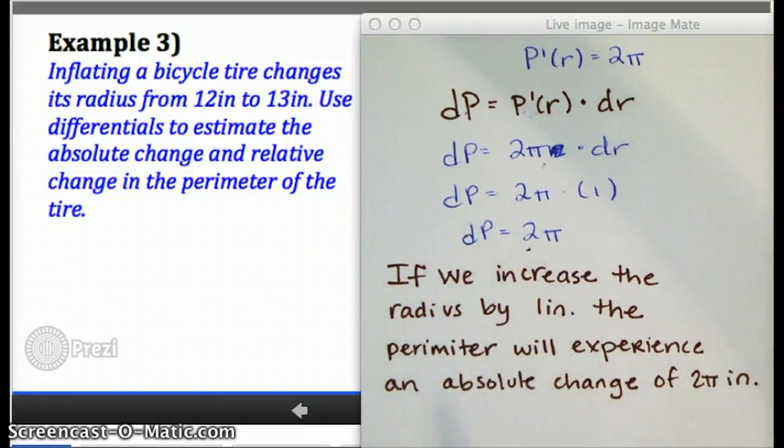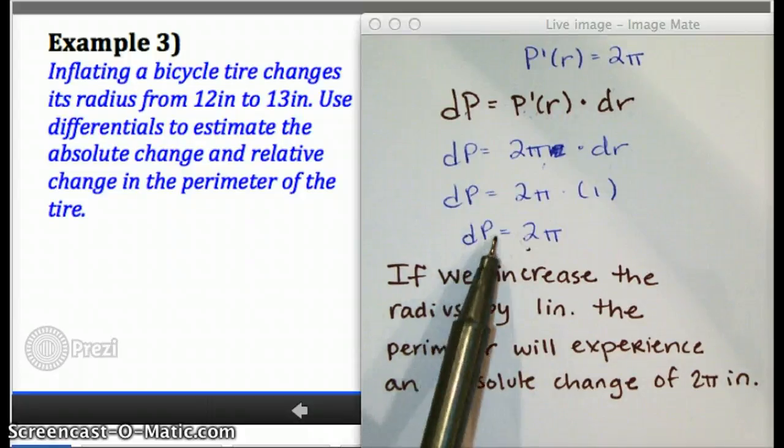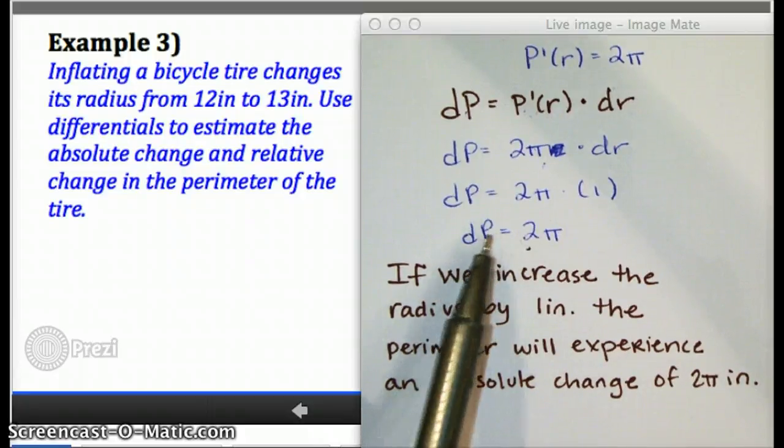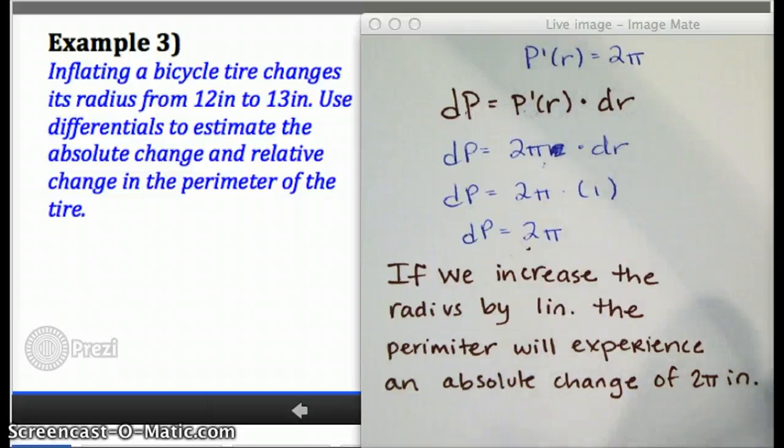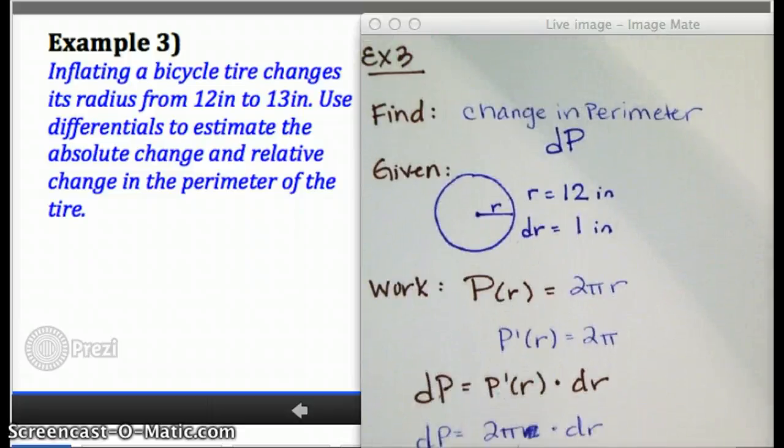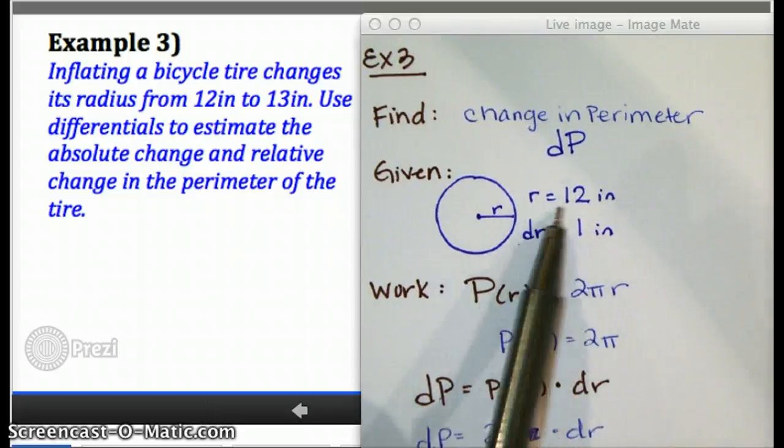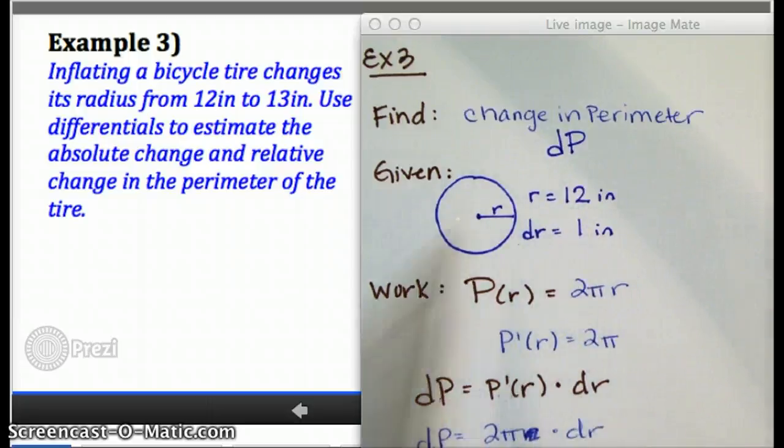That's right. The relative change would be dp divided by the original perimeter. That's actually not a number that we have. We'd have to go back and find it. So we've got the perimeter equation right here. If the original radius was 12, what was the original perimeter?